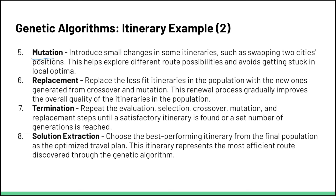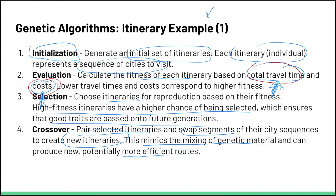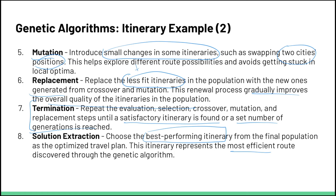Next we have mutation: we introduce small changes in some itineraries, just swapping two cities' positions — more incremental, smaller changes. Then we replace the less fit itineraries in our initial population with the new ones, so we keep the fit itineraries and get rid of the duds. This gradually improves the overall quality of the itineraries in the population. We do this process all over again until a satisfactory itinerary is found according to criteria or a set number of generations is reached, then choose the best performing itinerary from the final population, which will be the most efficient in terms of total travel time and costs.